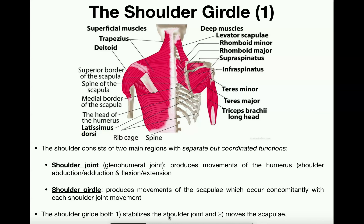In terms of stabilizing the shoulder joint, the shoulder girdle muscles act like the packing peanuts in a box. If you tried to ship glassware without packing peanuts, the glassware would move around and probably break. The shoulder girdle muscles act like those packing peanuts, stuffing the joint in so it doesn't move and is stabilized. Those are the two major functions of the shoulder girdle, and we'll talk about the shoulder girdle muscles first, then cover the shoulder joint in later videos.